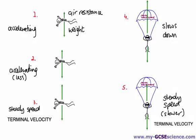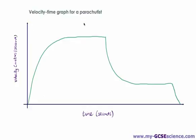Here we have a velocity-time graph for a parachutist. It's a very strange shape, but if you think about it carefully it does make sense. Initially at the start of the jump, the downward velocity is zero — the person is standing on the plane waiting to jump. As soon as they jump their velocity starts to increase rather rapidly, so we say the parachutist is accelerating rapidly towards the earth. The rate of acceleration then decreases until eventually the parachutist is going at a steady speed — that's our terminal velocity. You can probably guess that this is the point when the parachute opens.